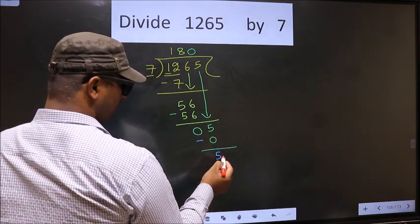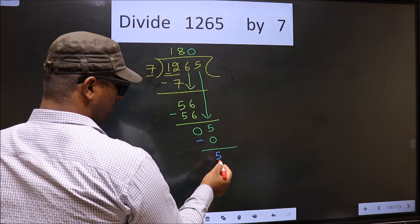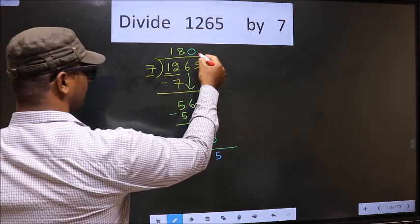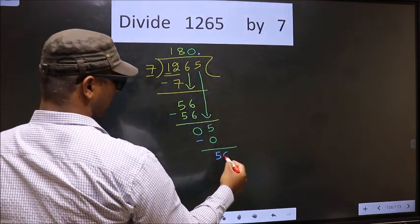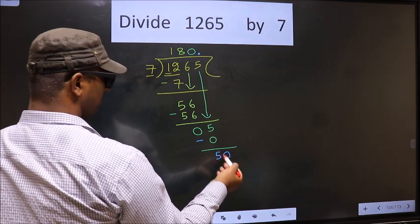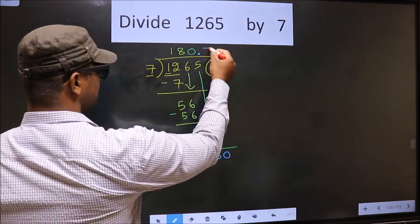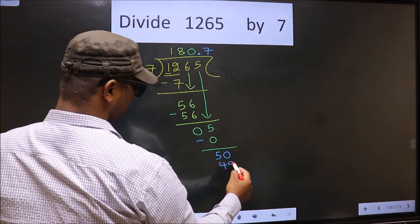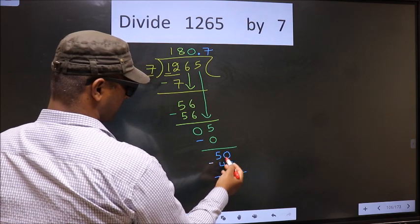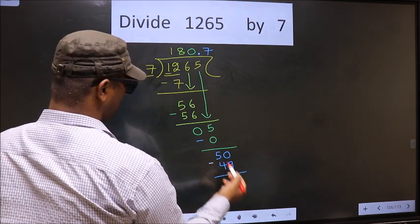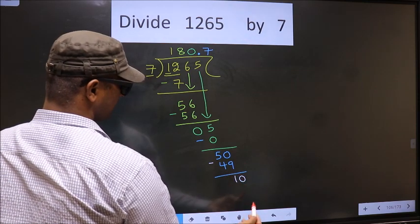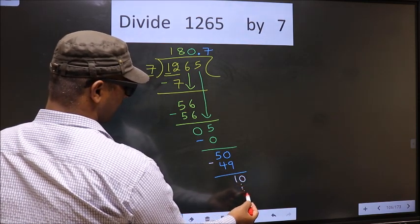Over here we did not bring any number down, and 5 is smaller than 7. Now you can put a dot and take 0 here. So 50. A number close to 50 in the 7 table is 7 times 7, which is 49. Now you subtract. 50 minus 49 is 1. 1 smaller than 7. We already have decimal, so directly you take 0 and continue the division.